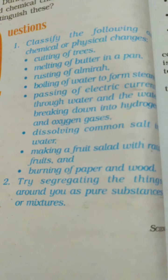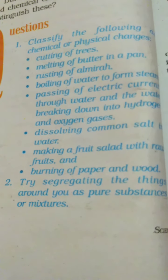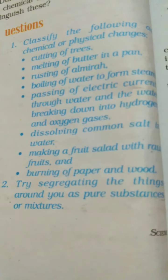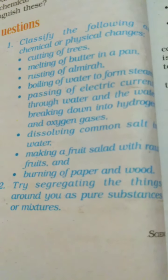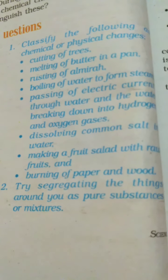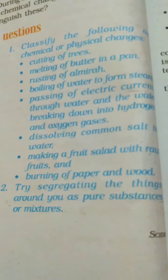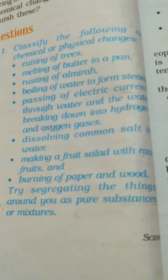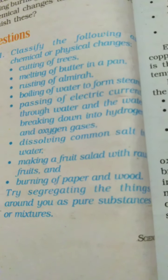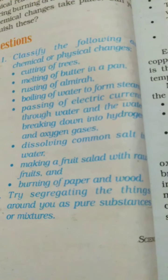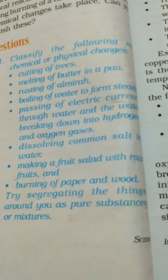Try segregating the things around you as pure substances or mixtures. That is a value-based, application-level question that you will do yourself. Think about what things you see in your surroundings and day-to-day life, and try to identify them as pure substances or mixtures. For example: air, which surrounds you, is a mixture. Water, which you drink, is a pure substance — it is a compound. Soil, which is everywhere and forms the land, is a mixture. That is how you will try to find it out.